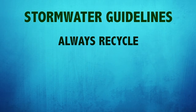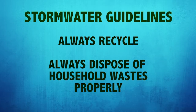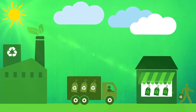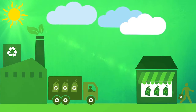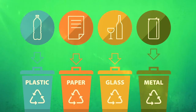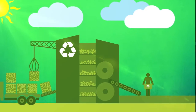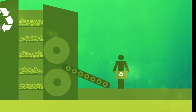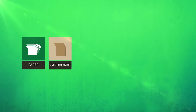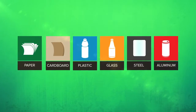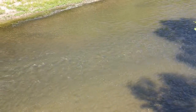Always recycle and dispose of common household wastes and household hazardous wastes properly. Check for recycling programs in your local community and county. Most counties have a solid waste district education and outreach program. Search locally and see where you can drop off common recyclables such as paper, cardboard, plastic, glass, steel, and aluminum to keep these items out of landfills and away from ditches and streams.